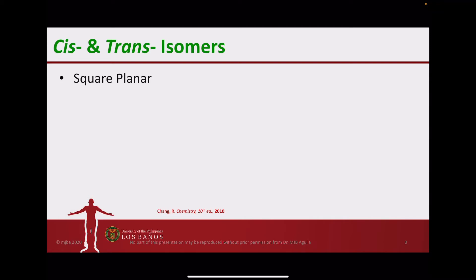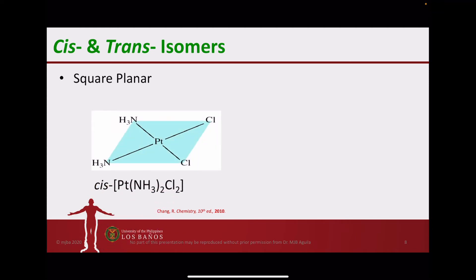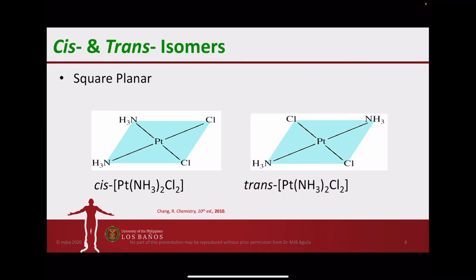An example would be the cis-trans isomerism exhibited by square planar complexes. In the illustration at the left, we have platinum with two chloride ligands and two ammonia ligands. In this arrangement, the two chlorides are adjacent to one another as well as the two ammonia ligands — this is referred to as the cis arrangement. In contrast, in the structure at the right, if the chlorides are opposite one another, as are the two ammonia molecules at 180 degrees, this is referred to as the trans arrangement.